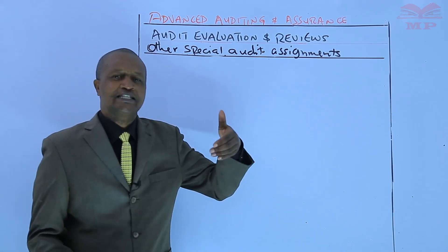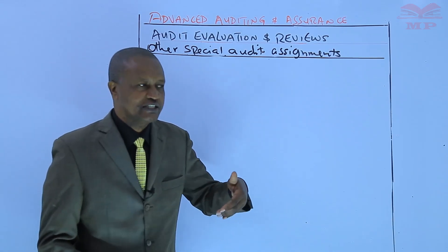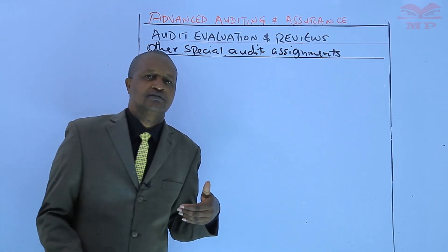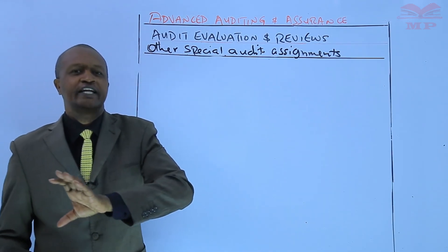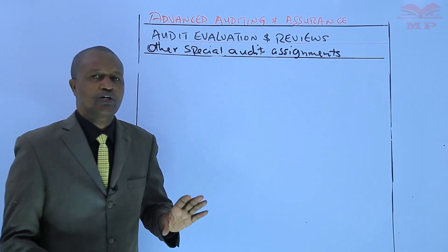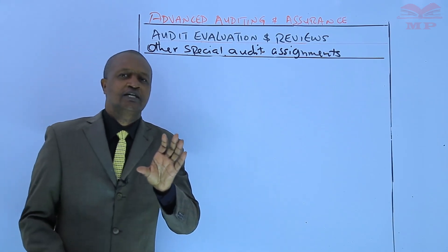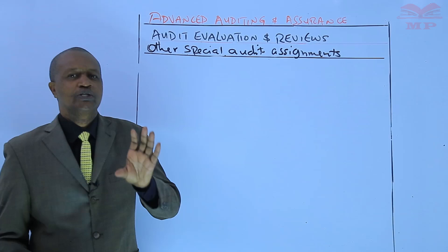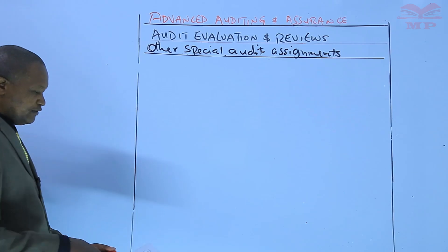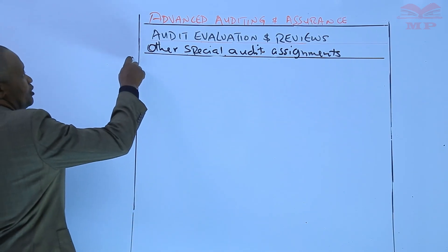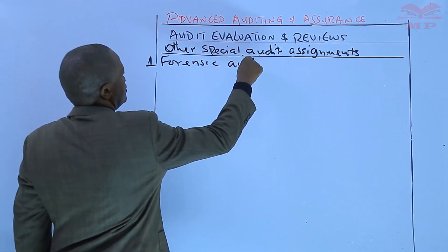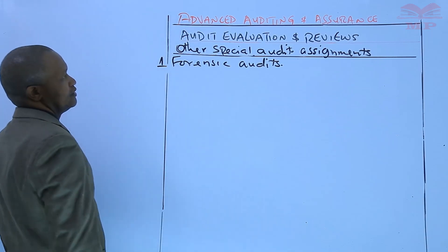These assignments are typically tailored to meet the specific needs and objectives of the client and may involve various areas of examination and reporting. In today's lesson, we are going to look at a few examples of other special audit assignments, the first being the forensic audit.